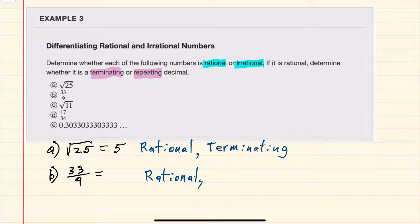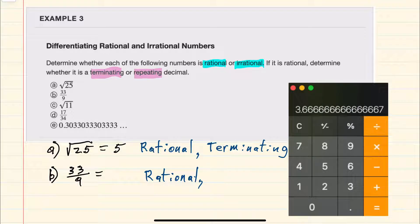To determine whether or not it is terminating or repeating, I can plug it into a calculator. 33 divided by 9 gives me 3.666 repeating. Notice that the calculator has the last digit as a 7, but that's only because it rounded up for the last digit that it's capable of displaying. So this would be repeating.